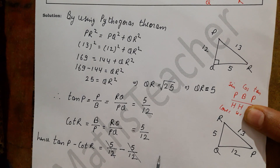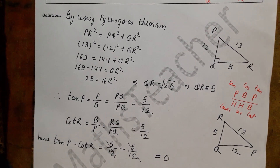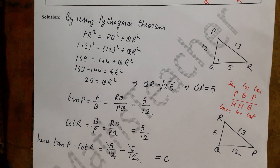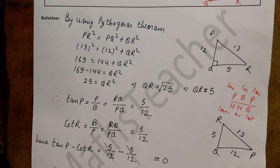The answer is 0. So this is our final answer. I hope you will understand this question in a good way. As many identities and ratios as you want to use, I will help you understand them using short methods.